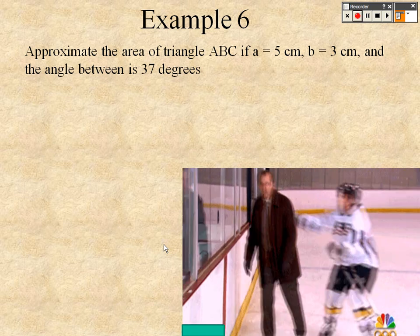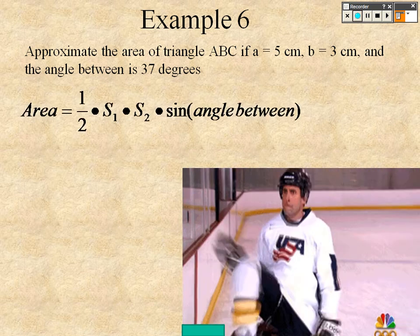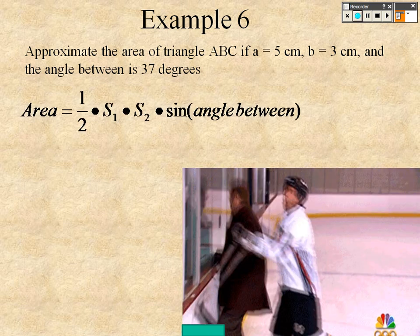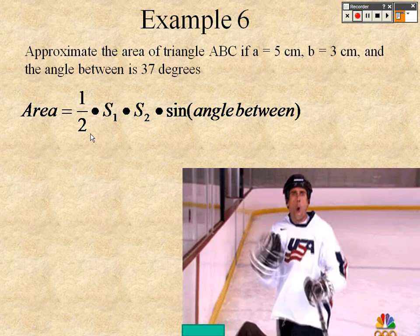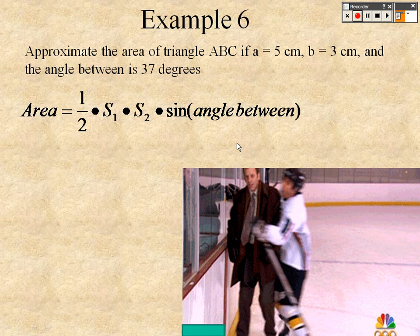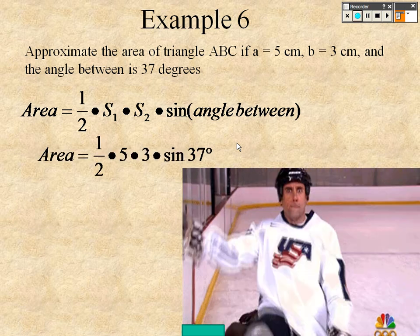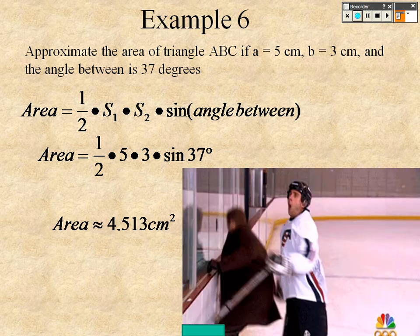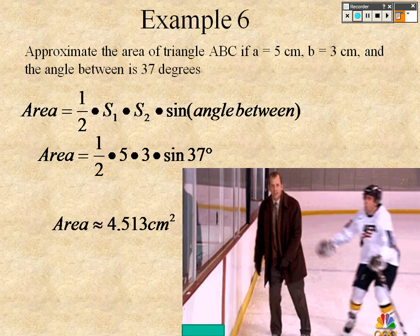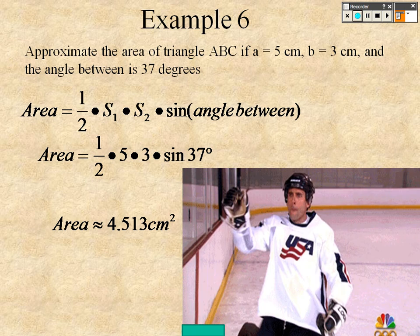Approximate the area of a triangle ABC if you have 5 and 3 and the angle between is 37. So it's one half times 5 times 3 times sine of 37. Like, it's that simple to find the area of its side, angle, side. It's that simple. So you get approximately 4.51 centimeters squared.